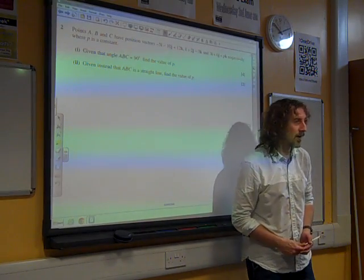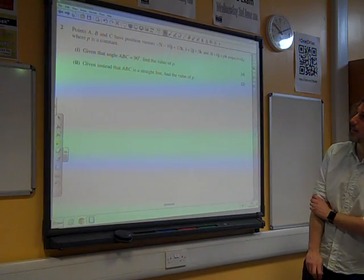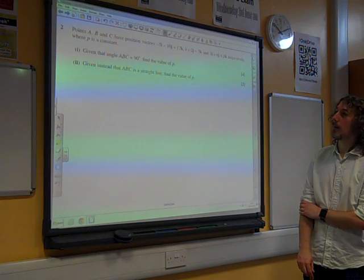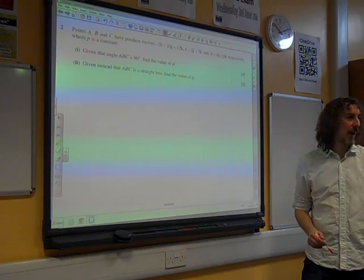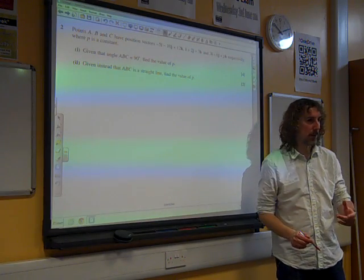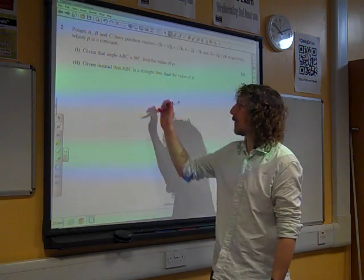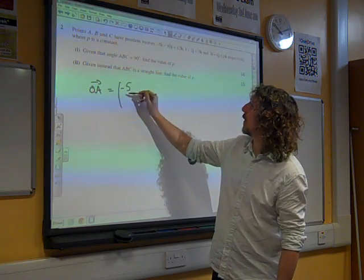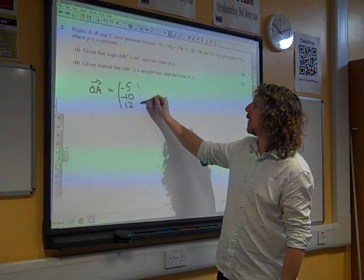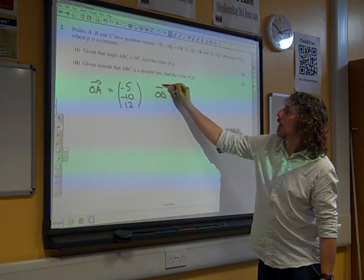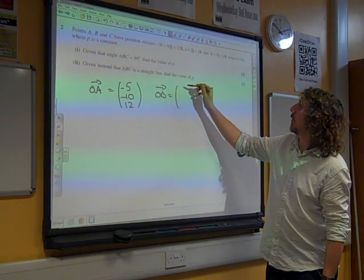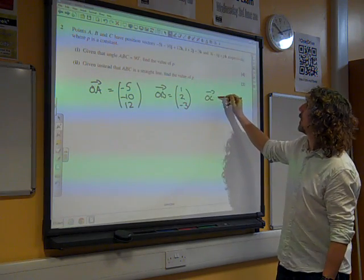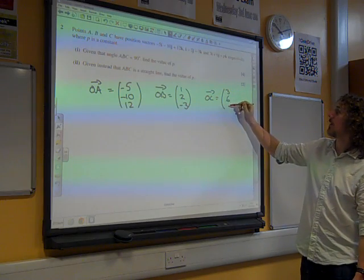Right, okay, question two, vectors question. The points A, B and C are position vectors given there where P is a constant. So these are how to get from the origin to each of these points. And if you're like me, you prefer working in column vectors anyway, so that one is minus 5, minus 10, 12. Now, to get to B, you do 1, 2, minus 3, and to get to the point C, it's the vector 3, 6, P.